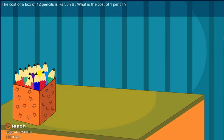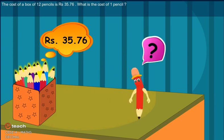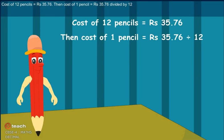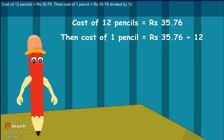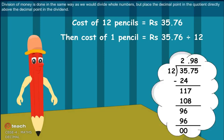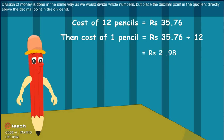The cost of a box of 12 pencils is Rs. 35.76. What is the cost of 1 pencil? Cost of 12 pencils equals Rs. 35.76, so the cost of 1 pencil equals Rs. 35.76 divided by 12. Division of money is done in the same way as dividing whole numbers, but place the decimal point in the quotient directly above the decimal point in the dividend.